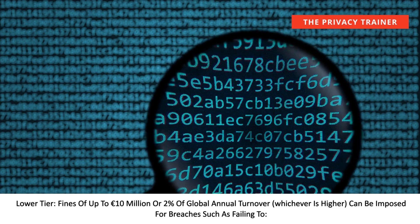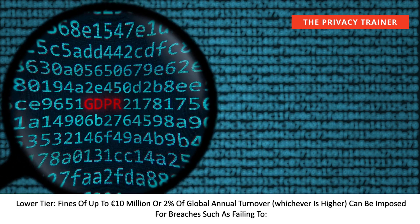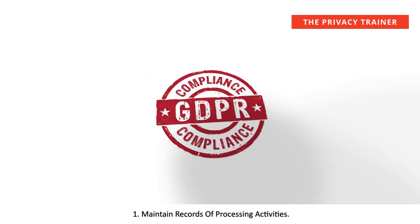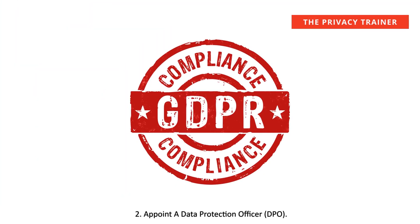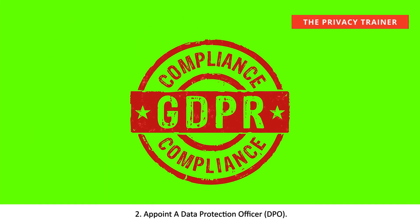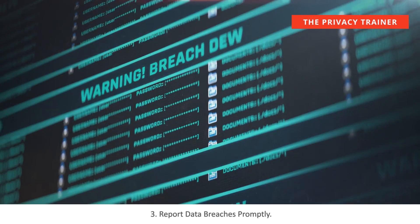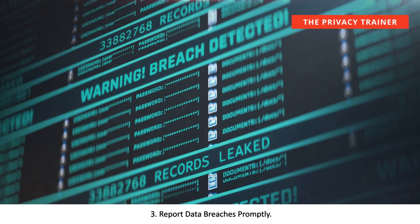Lower-tier fines can be imposed for breaches such as failing to: 1. Maintain records of processing activities. 2. Appoint a Data Protection Officer, DPO. 3. Report data breaches promptly.